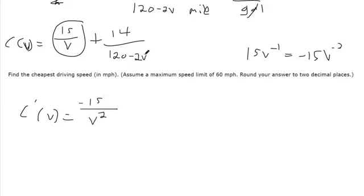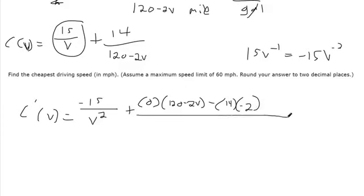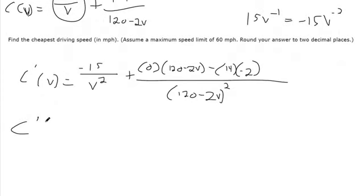For the derivative of this term, you can use the quotient rule. The quotient rule says it's the derivative of the top function, so the derivative of a constant is 0, times the bottom function kept the same, subtracted by the top function kept the same, times the derivative of the bottom function - the derivative of 120 minus 2V is just minus 2. That's all over the bottom function squared. That's the derivative. We want to set this equal to 0 to find all potential critical points.